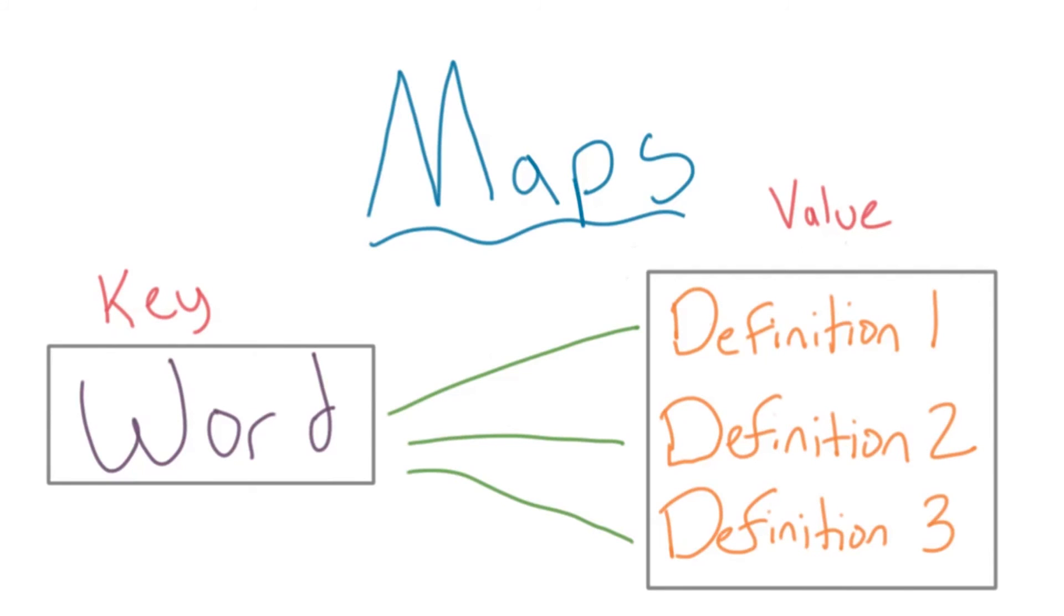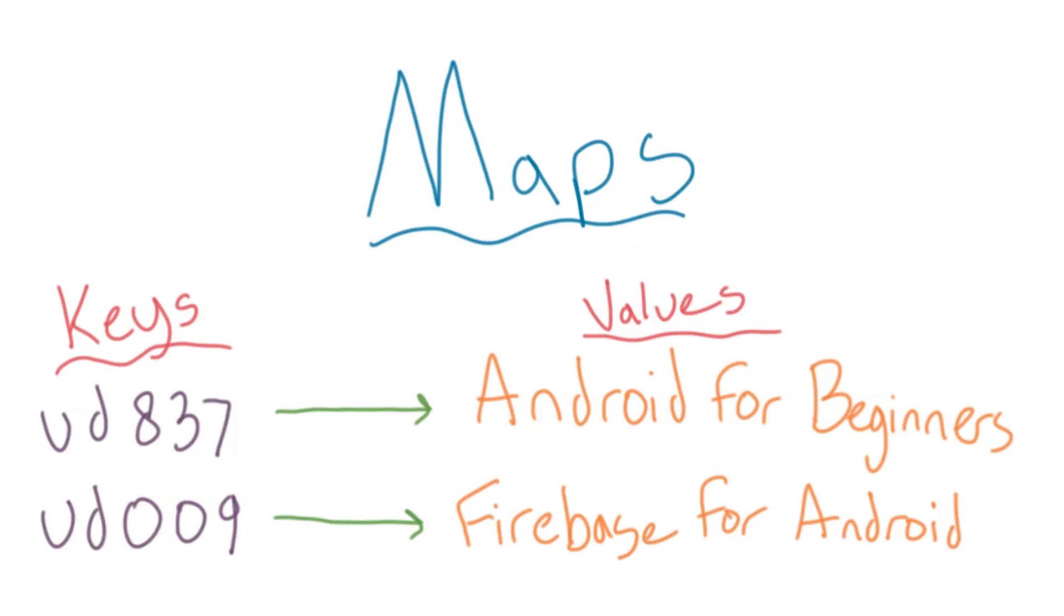So, what are maps useful for other than dictionaries? You can use a map for a lot of things that have unique names. For example, maybe you have a bunch of information about Udacity courses. You could store each course ID as a key and use that to look up more detailed information as values.